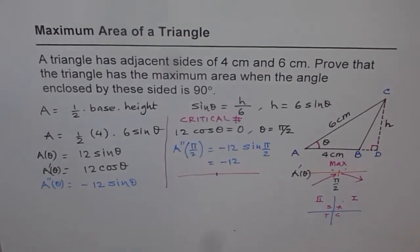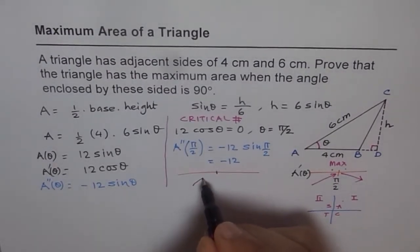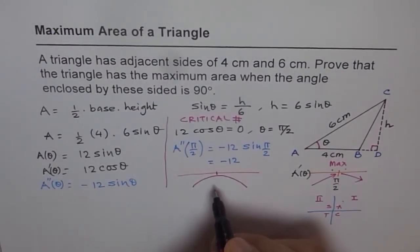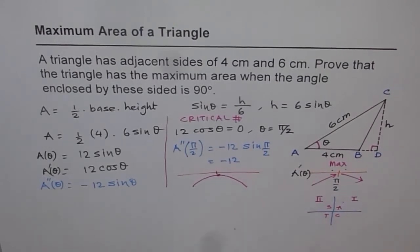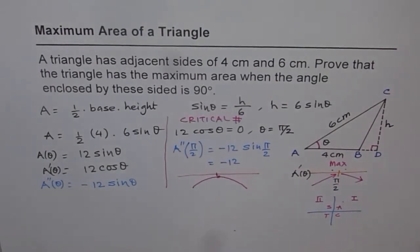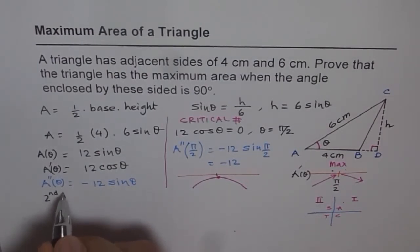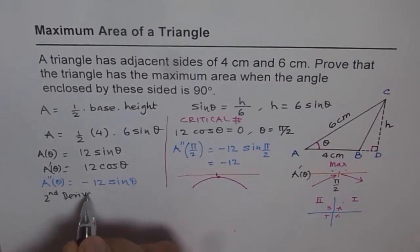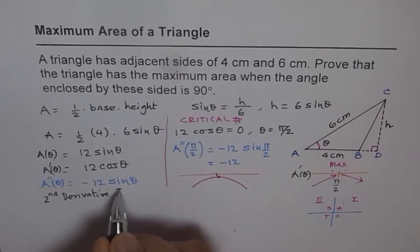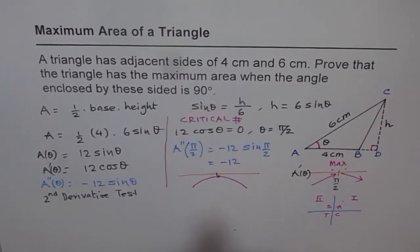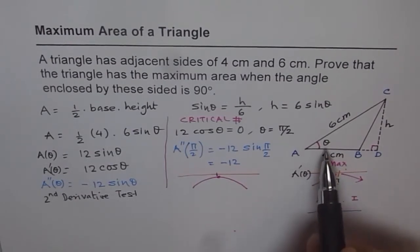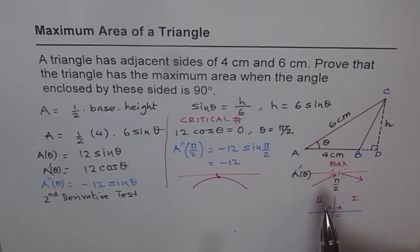What does that mean? It means the concavity is concave down. So the function is like this. Now if you have concave down you have a maximum. Do you see that? Therefore from the second derivative test also, we prove that we indeed have a maximum when theta is 90 degrees or pi by 2.